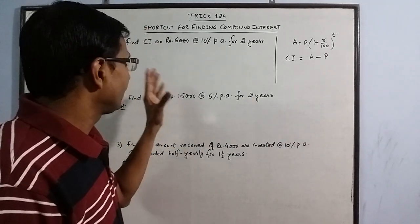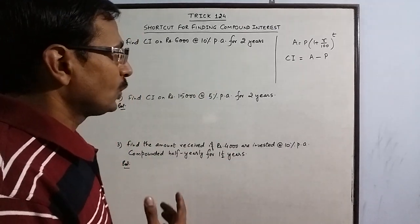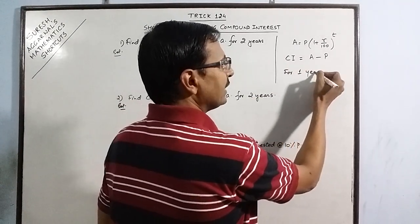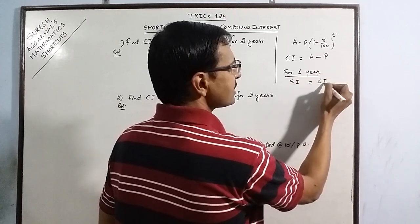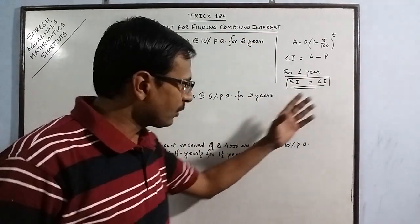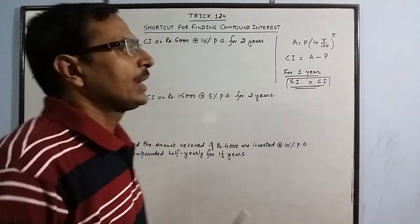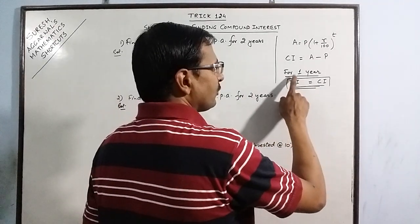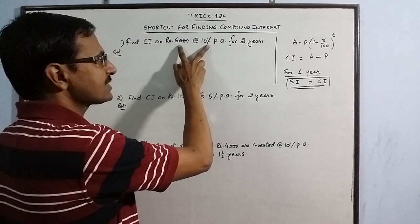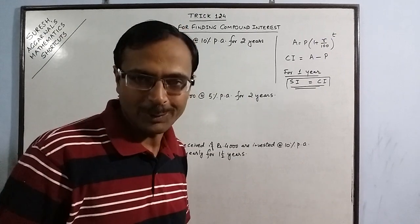In this question, we have been given 10% per annum interest. We need to know that for 1 year, if the time is 1 year, simple interest and compound interest is the same. We do not need to apply the formula for compound interest if the time period given is only 1 year. For finding interest for 1 year, we can just multiply the principal with 10%. 10% of 6000 will give you the interest for the first year.